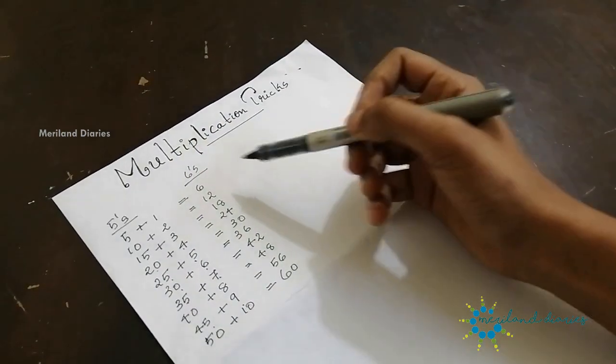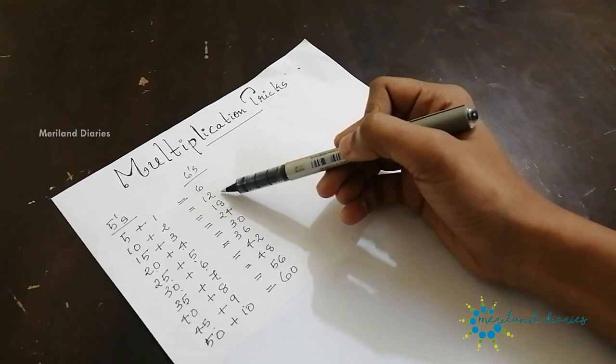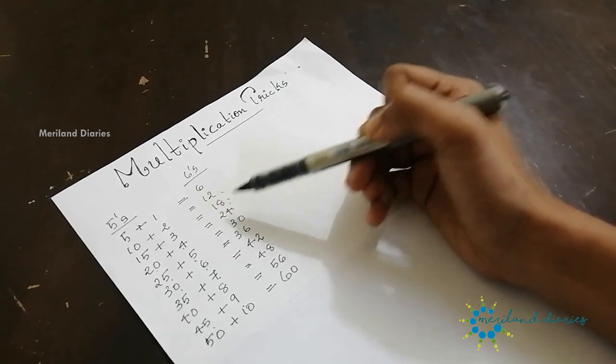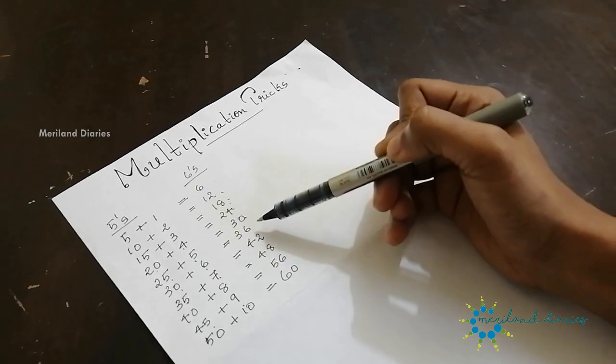This is the 6 times table. 6 into 1 is 6, 6 into 2 is 12, 6 into 3 is 18, 6 into 4 is 24, 6 into 5 is 30.